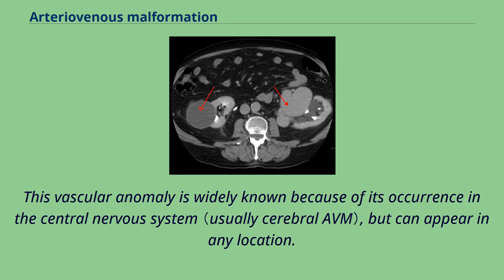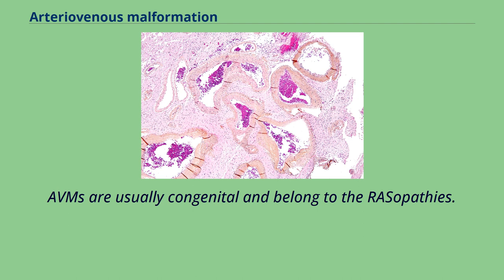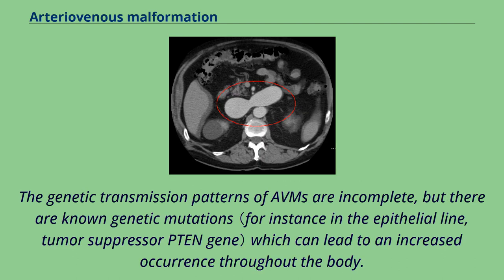This vascular anomaly is widely known because of its occurrence in the central nervous system, but can appear in any location. Although many AVMs are asymptomatic, they can cause intense pain or bleeding or lead to other serious medical problems. AVMs are usually congenital and belong to the vasopathies. The genetic transmission patterns of AVMs are incomplete, but there are known genetic mutations which can lead to an increased occurrence throughout the body.